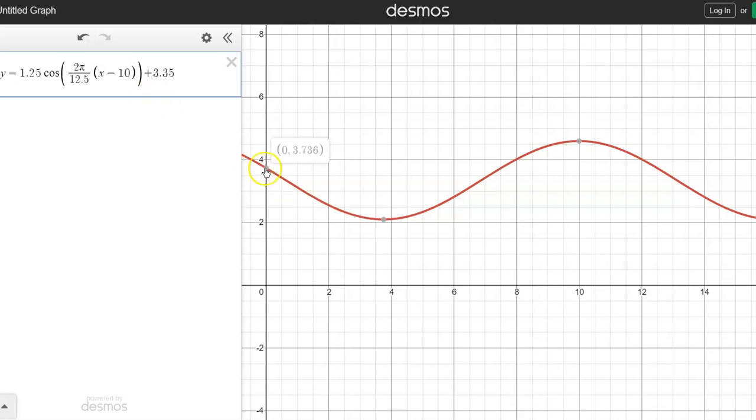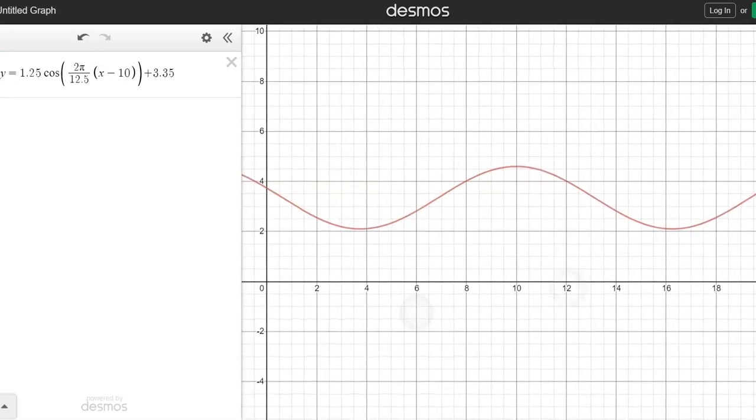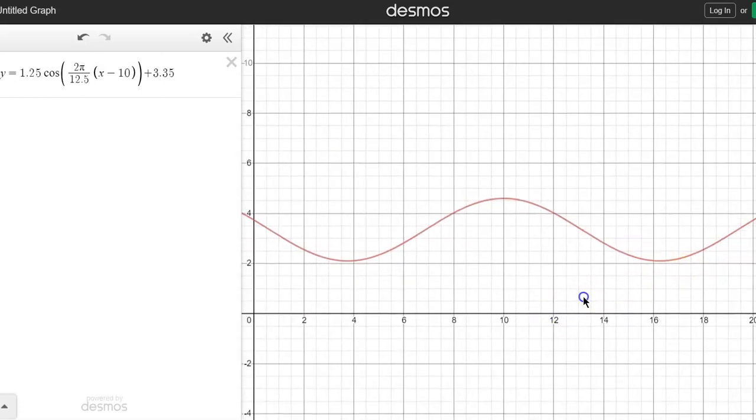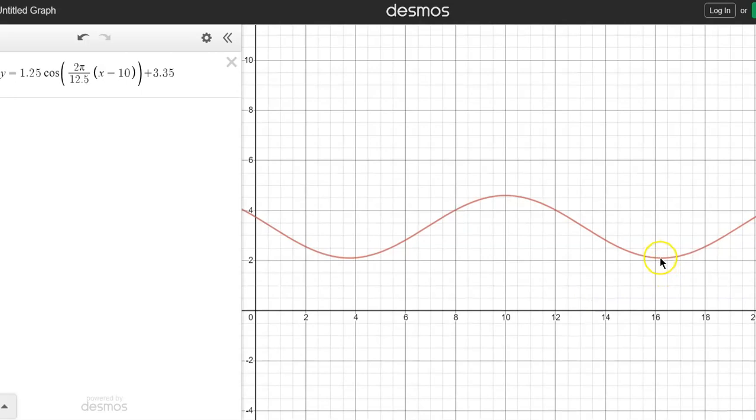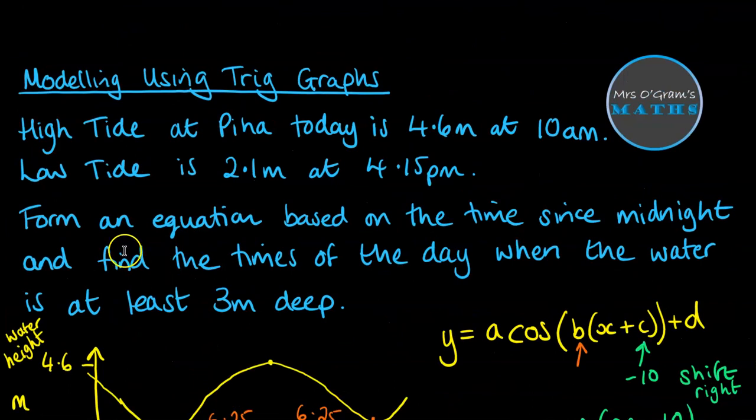And here that is with the places that we were expecting it to be at its lowest and highest. I'll just squeeze that in a little bit to show you the low point here, where we had it going to the low tide over here at 16.25. So we've got ourselves a nicely working curve. Now the other part of the question, if we go back to here, was from this equation when is the water at least three meters deep.